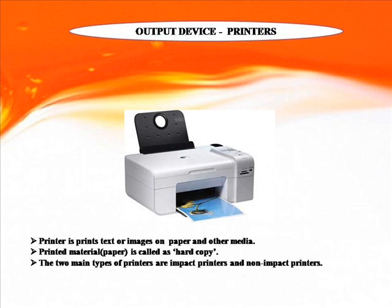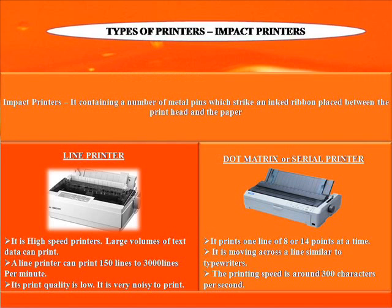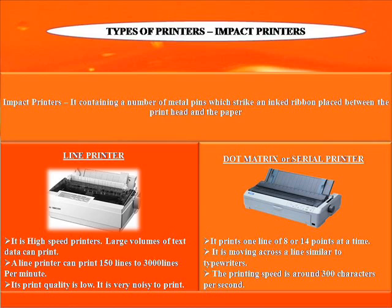Printer: A printer prints text or images on paper and other media. Printed material is called a hard copy. The two main types of printers are impact and non-impact printers. Impact printer: It contains a number of metal pins which strike an inked ribbon placed between the print head and the paper. Line printer: A high-speed printer where large volumes of text data can be printed, at 150 to 3000 lines per minute, though print quality is low and it is very noisy. Dot matrix or serial printer: It prints one line of 8 or 14 dots at a time, moving across a line similar to a typewriter, with a printing speed of around 300 characters per second.